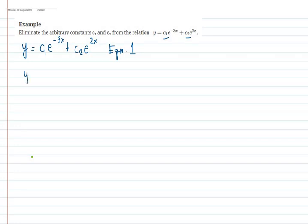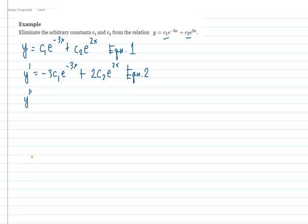Equation 2 is the first derivative: y′ = −3c₁e^(−3x) + 2c₂e^(2x). Equation 3 is the second derivative: y″ = 9c₁e^(−3x) + 4c₂e^(2x).